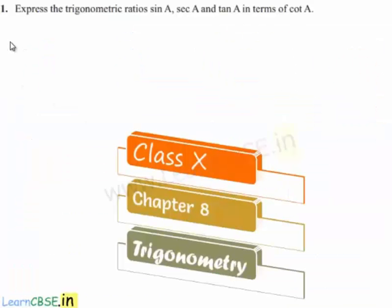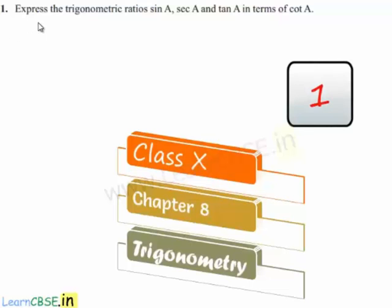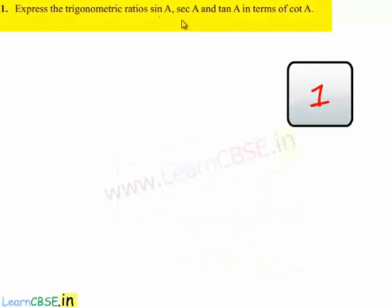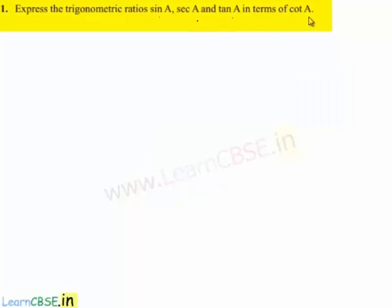Moving on to the first question: express trigonometric ratios sine a, secant a, and tan a in terms of cot a. Now moving on to the solution.